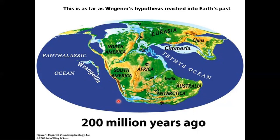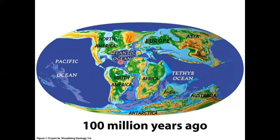At 200 million years ago, South America is somewhat recognizable, Africa partially so, but North America you probably wouldn't recognize without its label. No Western North America, no California, no Florida, most of Texas isn't there. By 100 million years ago, North America is taking shape, but there's a shallow interior ocean separating Eastern from Western North America — which explains the limestone found in Texas, Indiana, and the Dakotas, and the salt and gypsum deposits in places like Saltville, Virginia.